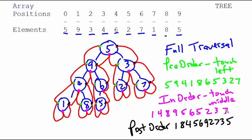And that's the post order traversal. So, these are the 3 classic ways that you're going to traverse a tree. Pre order, in order, and post order. Pre order is touch left. In order is touch middle. Post order is touch right.